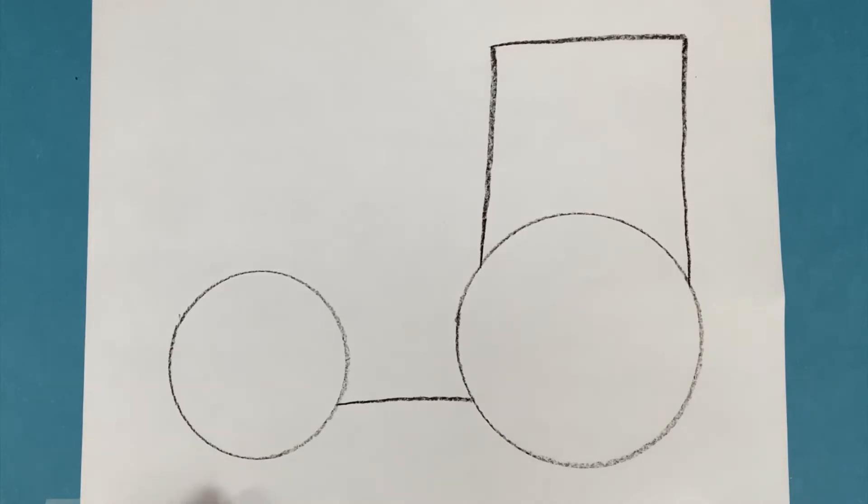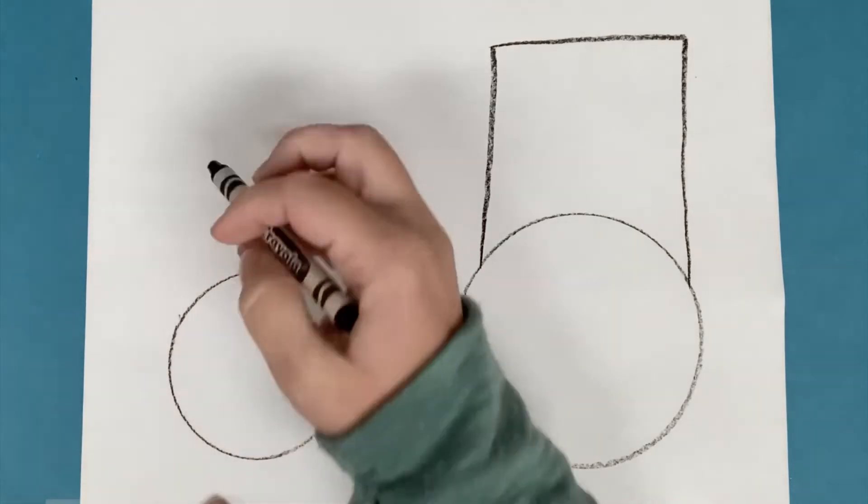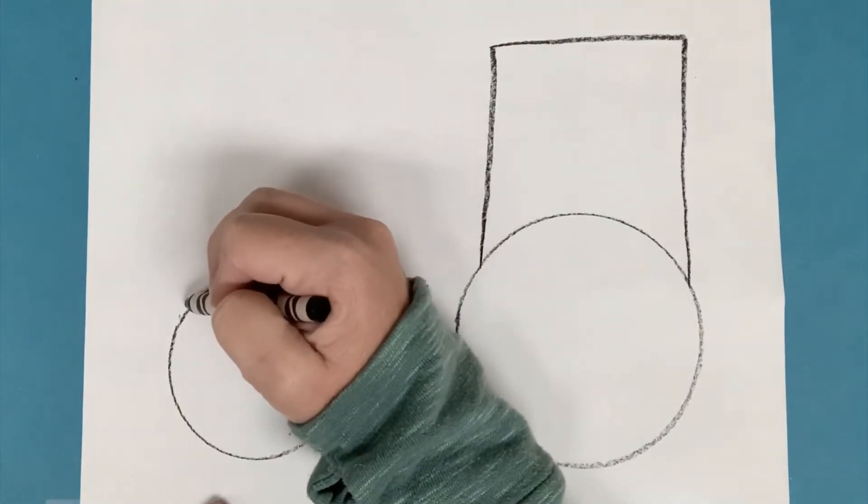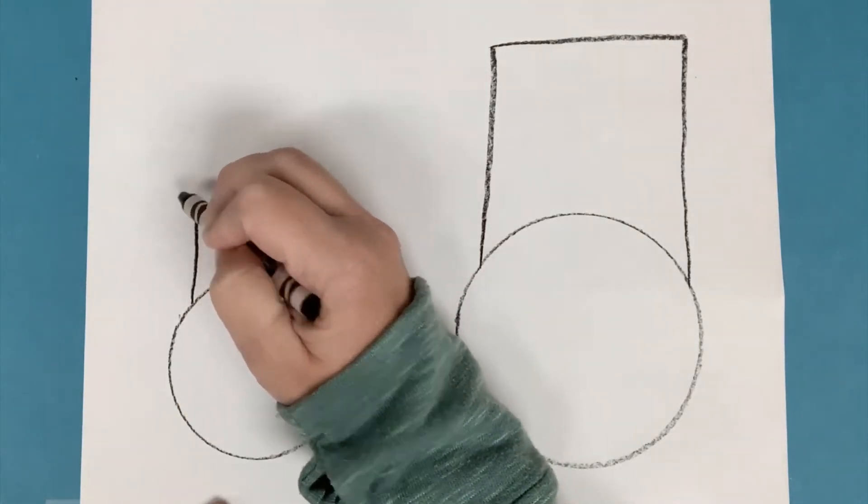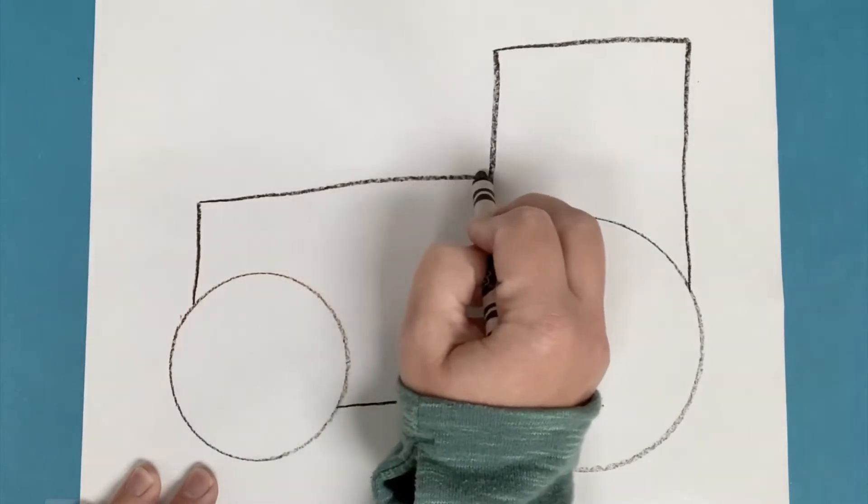So now I'm going to take another vertical line from this smaller circle this time. And this time I'm not going to go quite as high up. Just a little bit of a line there, shorter line. And now I'm going to take a horizontal line and bring that all the way to the other rectangle that I made.